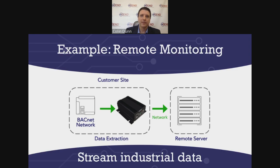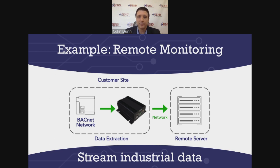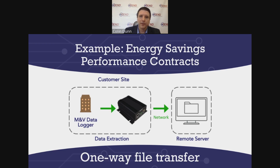Digging into some specific use cases — you might want to stream industrial data. You may want to remotely monitor a facility that's on the other side of a campus, or on the other side of town, using an industrial protocol like BACnet. You can use a diode to listen in on that network to get the information you need and then send it off to a remote server so your engineering teams can know what's happening. You could also use it to send log files, CSVs, or any kind of file you might want in a one-way file transfer — from one network to another, with that physical air gap in one direction.